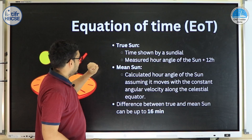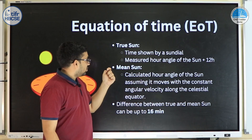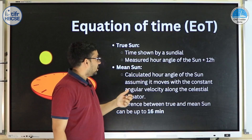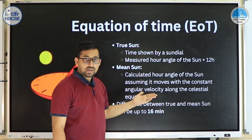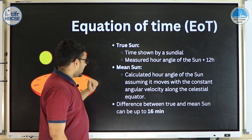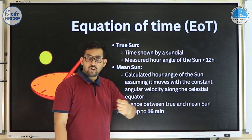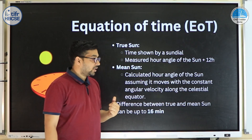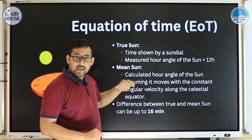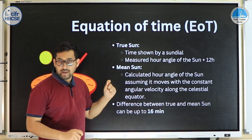Let's understand a few concepts. The first is called the True Sun — this is based on where the Sun exactly is. The time provided by a correctly read sundial is True Sun time, measured as the hour angle of the Sun plus 12 hours. In comparison, Mean Sun is the calculated position of the Sun if it were moving uniformly across the celestial equator, which is not the case because of the tilt of Earth's rotation axis.